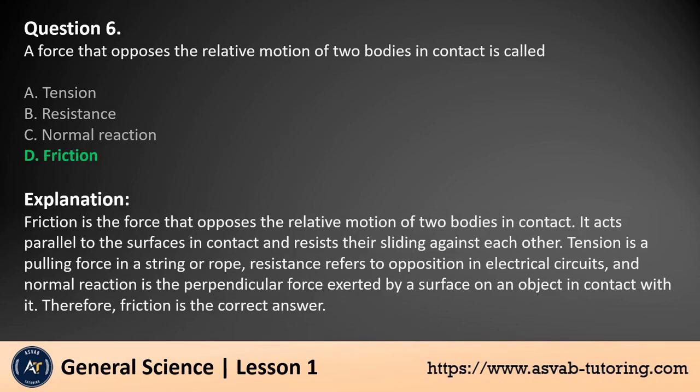The answer is d. Friction is the force that opposes the relative motion of two bodies in contact. It acts parallel to the surfaces in contact and resists their sliding against each other. Tension is a pulling force in a string or rope, resistance refers to opposition in electrical circuits, and normal reaction is the perpendicular force exerted by a surface on an object in contact with it. Therefore, friction is the correct answer.